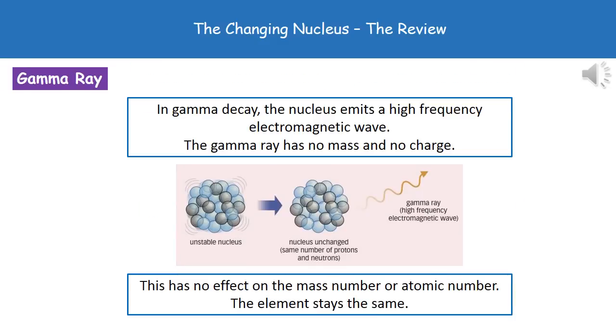The final type of decay, then, is our gamma decay. Now, if you remember what we said, a gamma ray, then, is just a high-frequency electromagnetic wave. Because it has no mass and no charge, then, what we see is that there is no effect on the mass number or the atomic number, and the element stays the same. All we're doing is losing that energy, which then makes it stable.